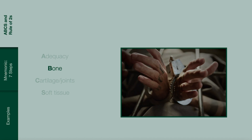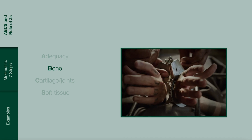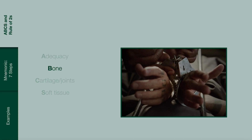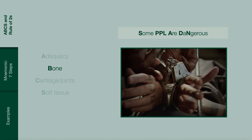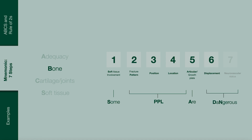Bone. Assessing the bone is a multi-step process of approximately seven steps. These steps can be simply memorized with the mnemonic 'Some People Are Dangerous,' where S in 'some' refers to soft tissue involvement, the PPL in 'people' for fracture pattern, position and location, A for articular growth plate involvement, and DNN in 'dangers' for displacement and neurovascular status.